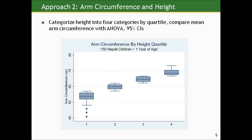We could do something less crude: categorize height into four categories by quartile — those between the lowest value and the 25th percentile in the first quartile, those between the 25th and 50th percentile in the second, and so on. We could then compare mean arm circumference using analysis of variance and get 95% confidence intervals for differences across height quartiles. Looking at this box plot of arm circumference by height quartile, you can very clearly see an association — a constant increase: as height goes up, so does arm circumference.